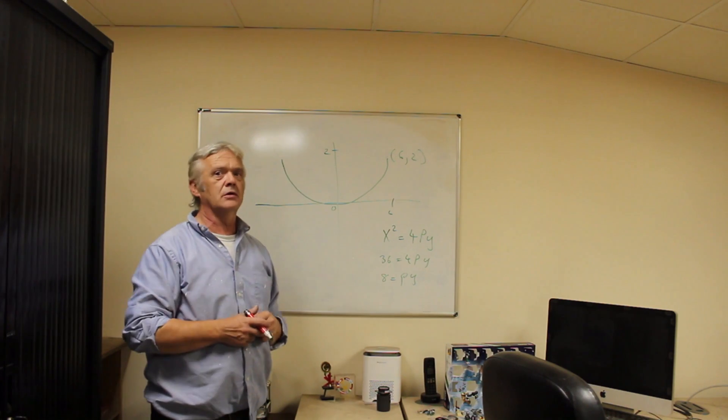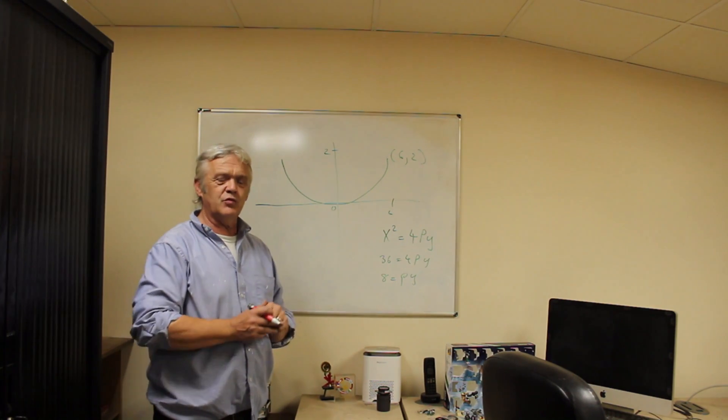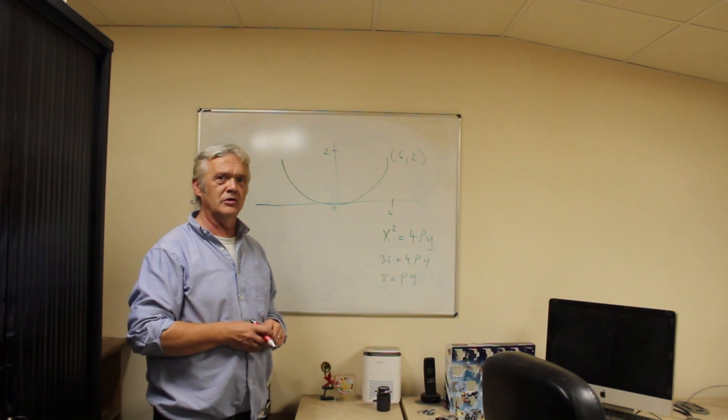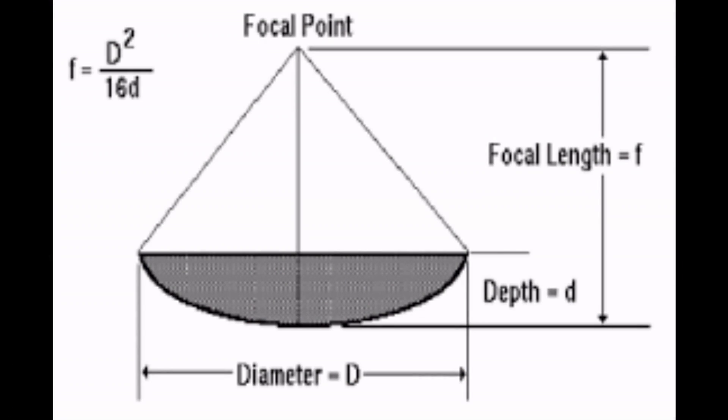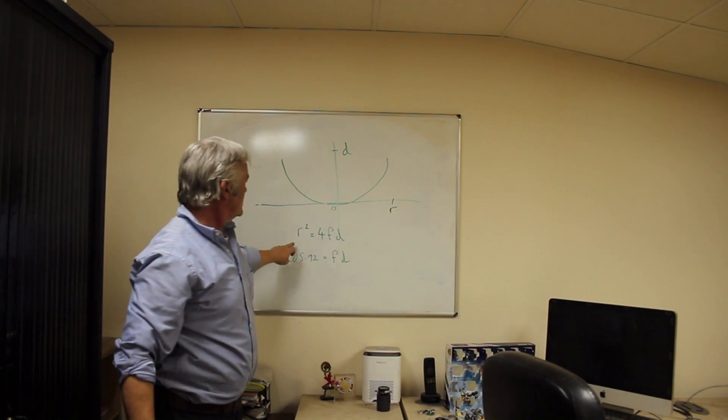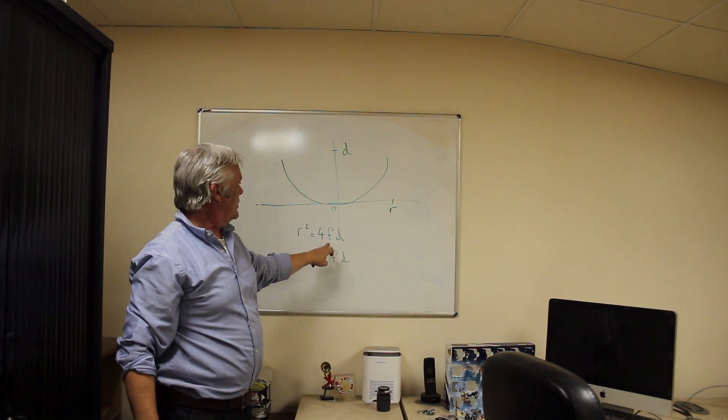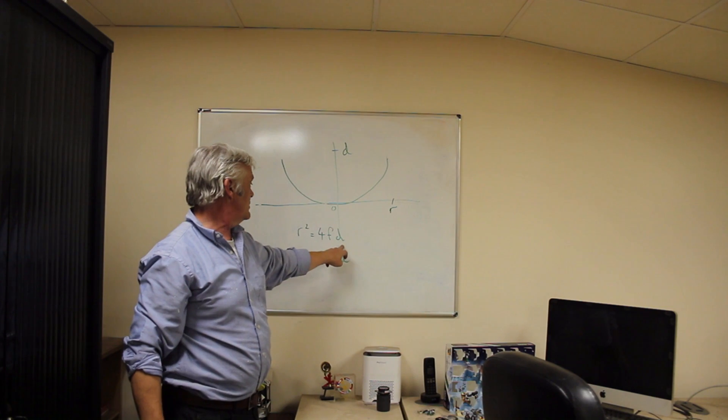Now we don't necessarily know how deep we need to make it and where that focal point is going to be. So we've stopped right there. Just to rework that little bit there's our parabola and we have a radius here and it has a depth here. What you need is that the radius squared equals 4 times the focal point times the depth.